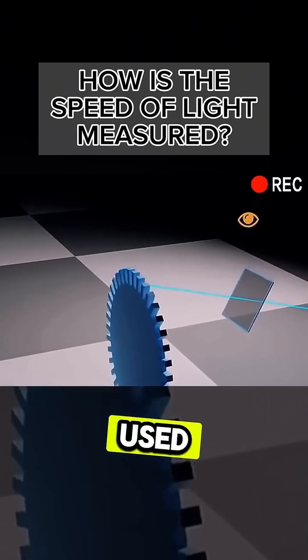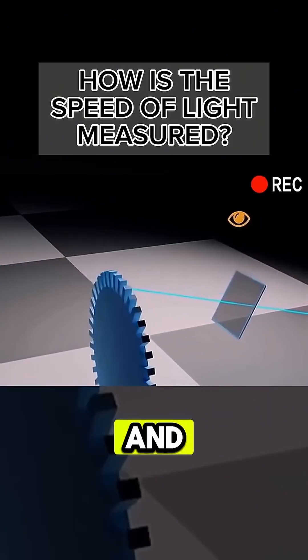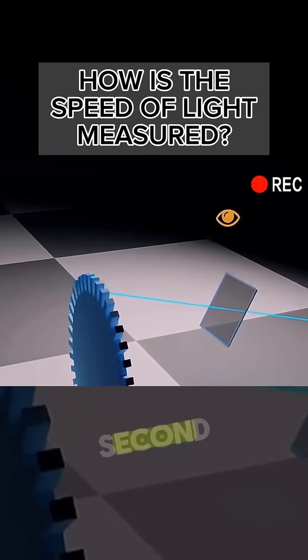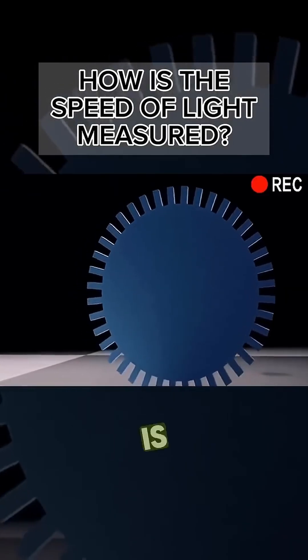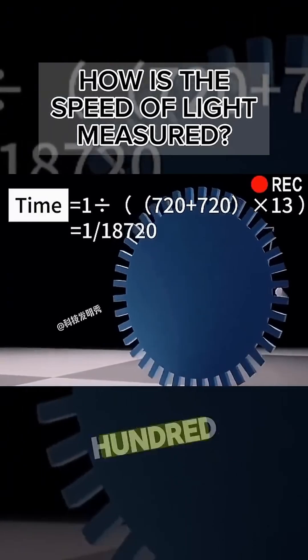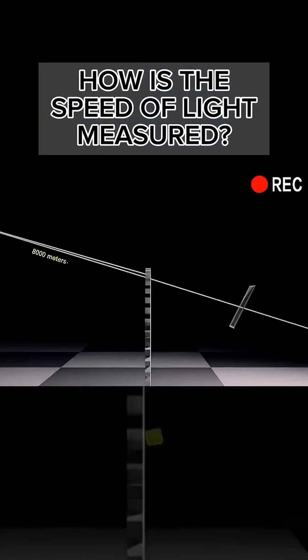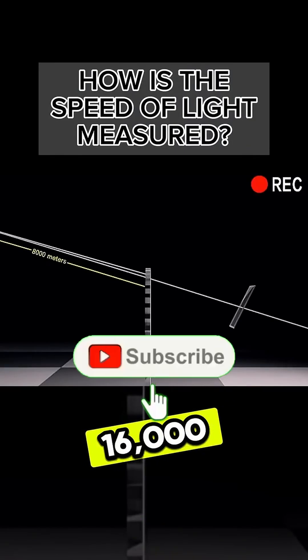The gear Fizeau used had 720 teeth and 720 slots. It makes 13 revolutions per second. So the time it takes the gear to turn a gap is 1 over 18,720 seconds. The distance from the gear to the mirror is 8 kilometers, so the round trip is 16 kilometers.